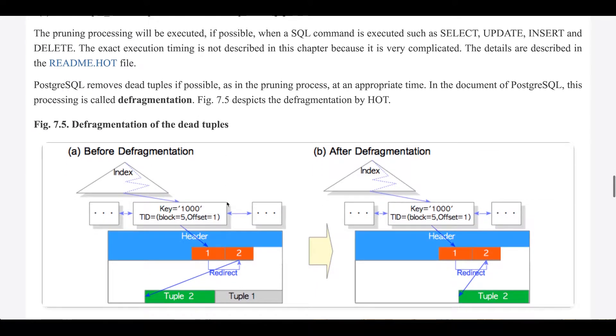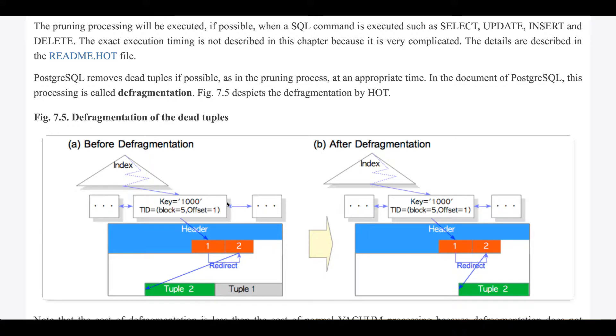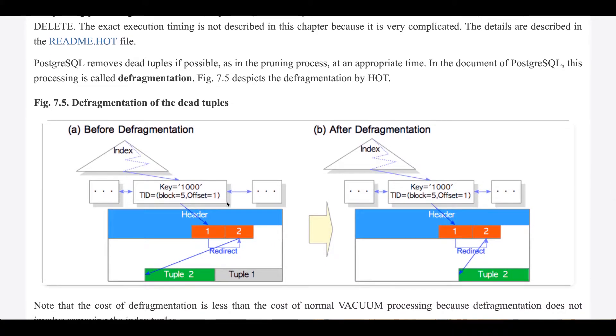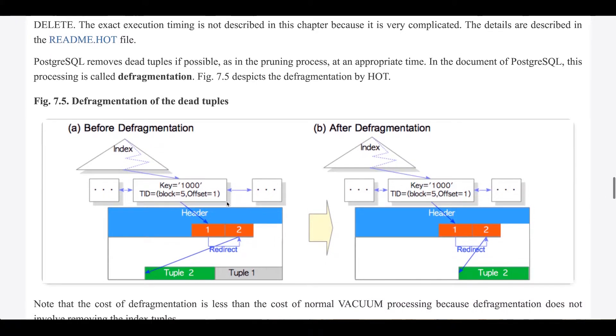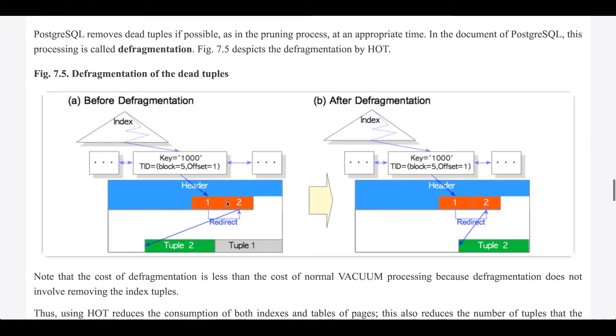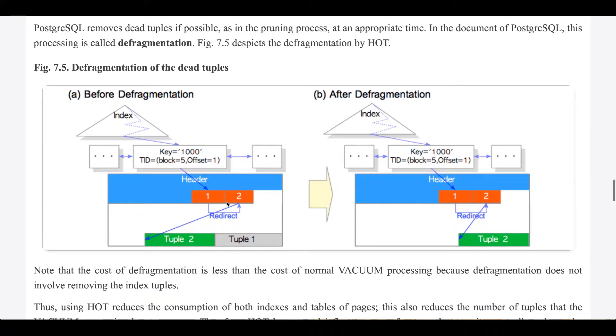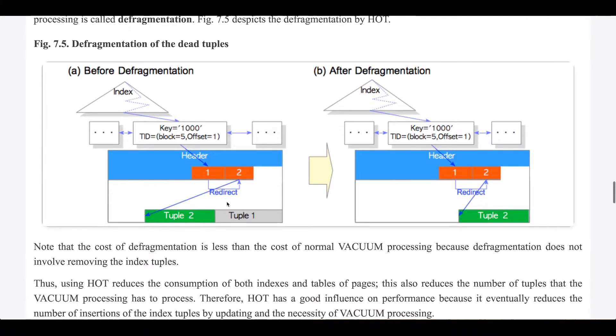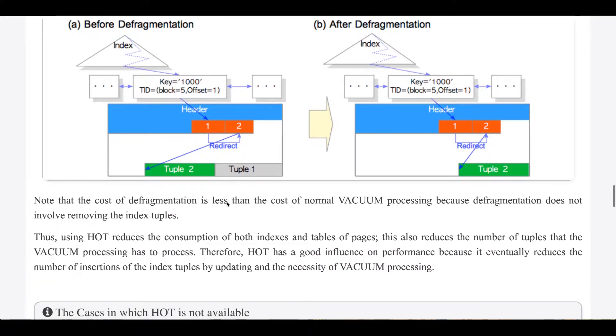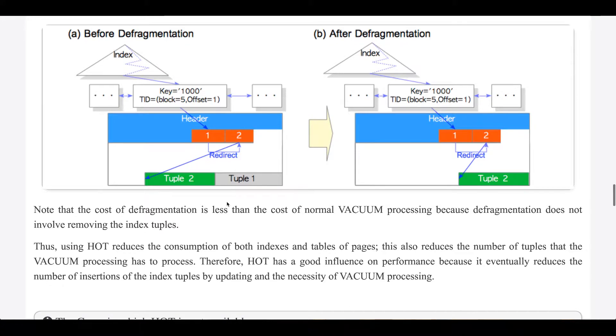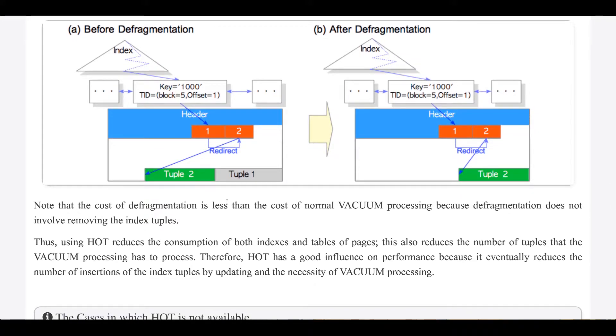Postgres removes dead tuples if possible, as in the pruning process, at an appropriate time. In the document of Postgres, this processing is called defragmentation. Figure 7.5 depicts the defragmentation by HOT. Note that the cost of defragmentation is less than the cost of normal vacuum processing, because defragmentation does not involve removing index tuples.